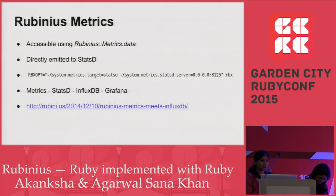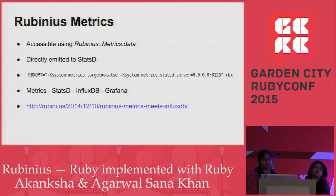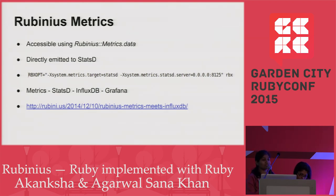Metrics are the most important thing an organization needs for monitoring their applications. Rubinius provides a very easy way to access those metrics. There is a class called Rubinius::Metrics with a method called data which gives you an object that lists all the metrics. From Rubinius 2.3 onwards, they added a facility to emit those metrics directly to StatsD, a daemon which aggregates the statistics collected.